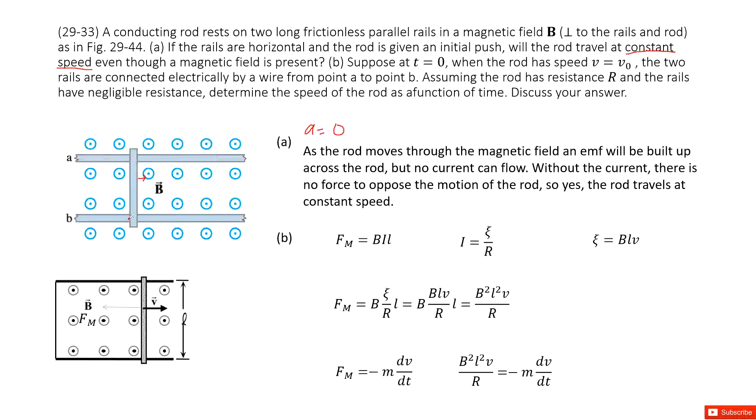But see, there is no loop, so there is no current. No current means we couldn't have magnetic force. This is the thing.